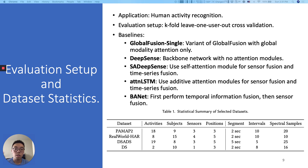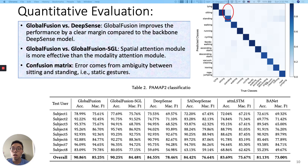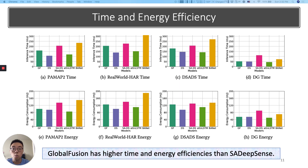Next is the evaluation. We evaluated the performance of sensor fusion models on public human activity recognition datasets, and five attention-based sensor fusion baselines are compared. We first show the quantitative modeling performance by accuracy and F1 score. Global Fusion improves performance by a clear margin compared to the backbone DeepSense model, while the two versions of Global Fusion show that the spatial attention module is more effective than the modality attention module. The confusion matrix indicates that the error mainly comes from the ambiguity between sitting and standing, which are two static gestures. We also evaluated model efficiency on a Nexus 5-based TensorFlow Lite setup. Global Fusion has higher time and energy efficiencies than SA-DeepSense, and only negligible overhead is caused by the global attention modules compared to the backbone DeepSense model.